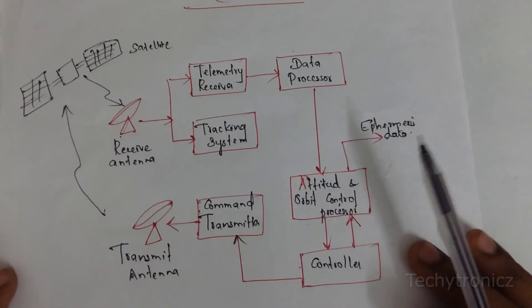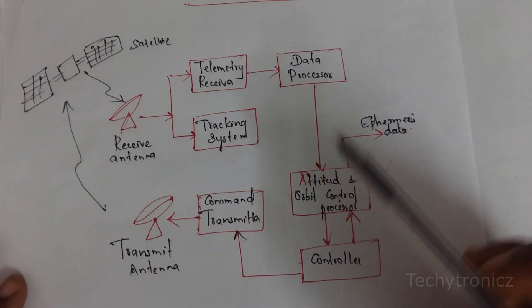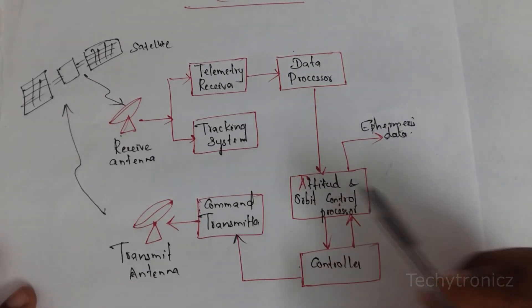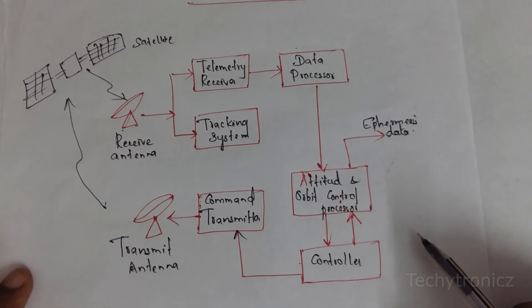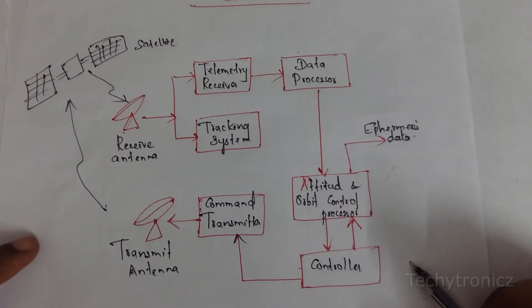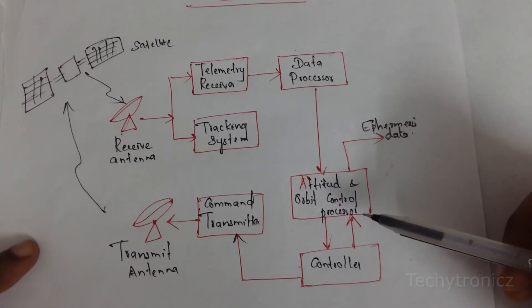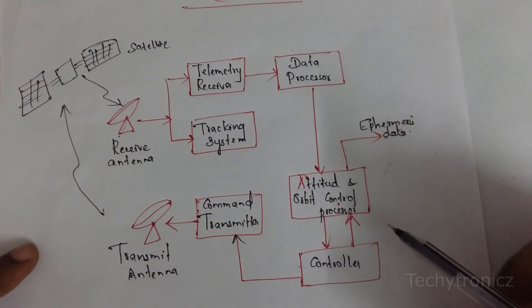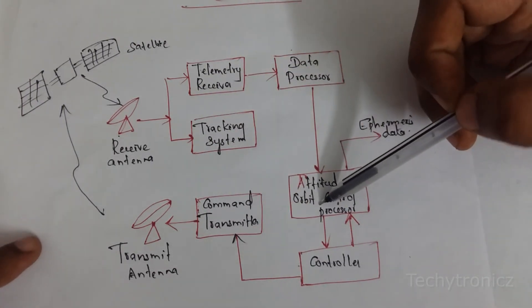This is the basic block diagram of TT&C, that is the telemetry tracking and command subsystem. This is one of the most important subsystems which are used for communication between the satellite and the earth station.